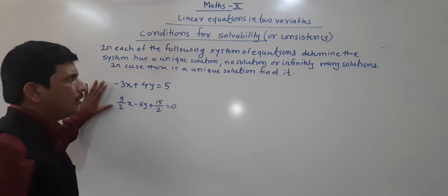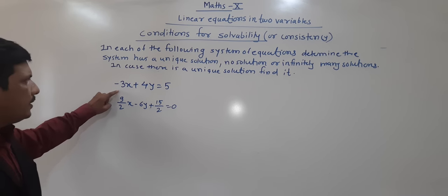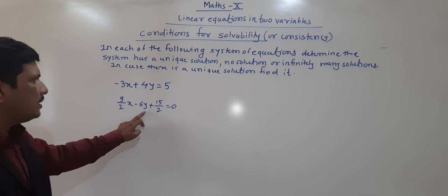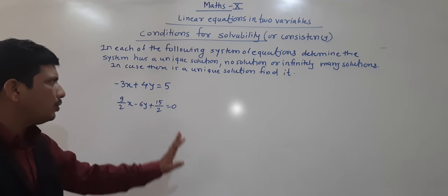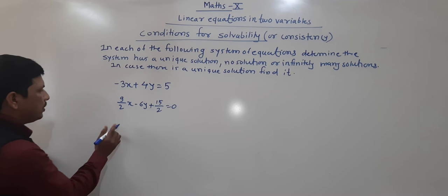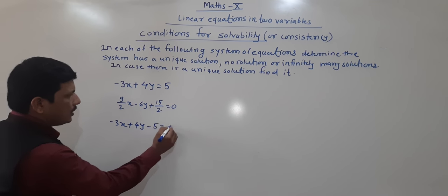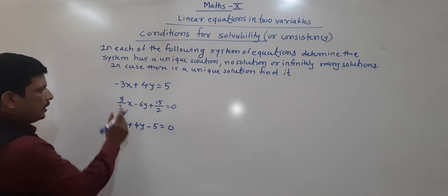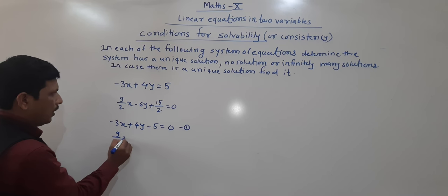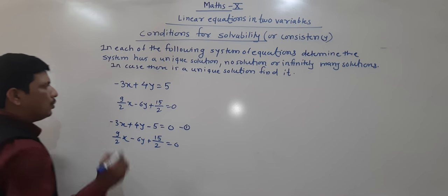The third problem: equations are given as −3x + 4y = 5 and (9/2)x − 6y + 15/2 = 0. Bringing to proper form: equation 1 becomes −3x + 4y − 5 = 0, and equation 2 is (9/2)x − 6y + 15/2 = 0.